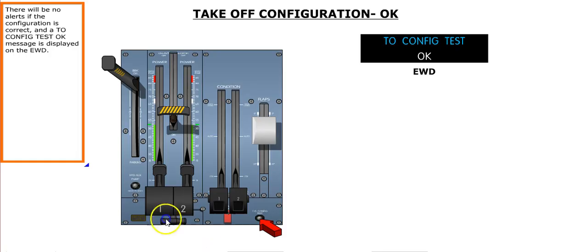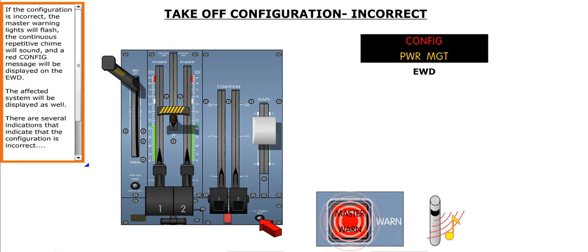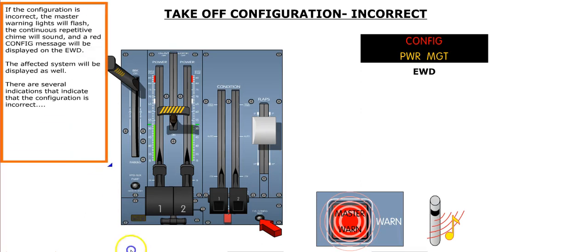There will be no alerts if the configuration is correct, and a takeoff configuration test OK message is displayed on the EWD. If the configuration is incorrect, the master warning lights will flash, the continuous repetitive chime will sound, and a red configuration message will be displayed on the EWD.